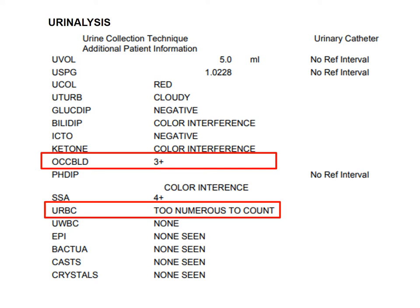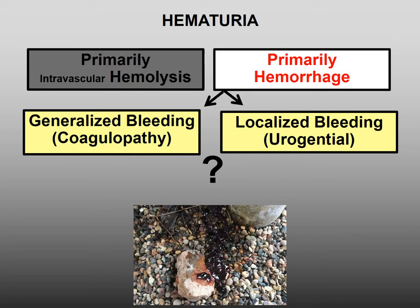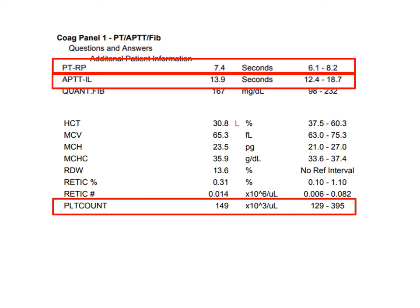Let's ask another question: is it a generalized coagulopathy or local bleeding? What you've seen are urinary clots, which tell us the coagulation system is working properly. To prove it, here is his coagulation profile, which is normal. Therefore, our patient has local bleeding.